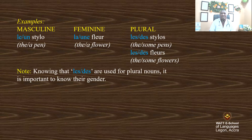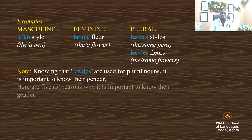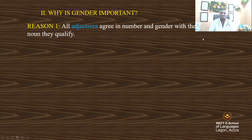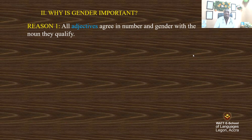Knowing that les and des are used for plural nouns, it is important to know the gender too. For example, if you say 'the table', what is the gender of 'table'? You should know. Here are five reasons why it is important to know the gender of a noun. Let's have a look at them. Pay attention to what we are going to study now.